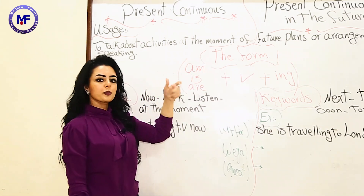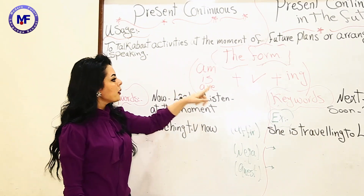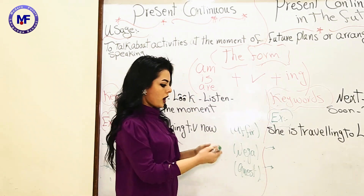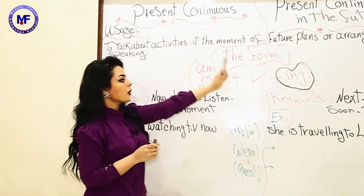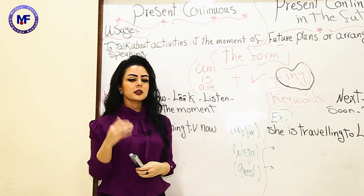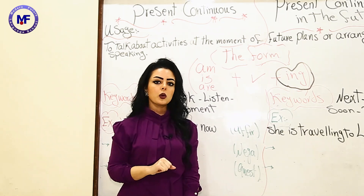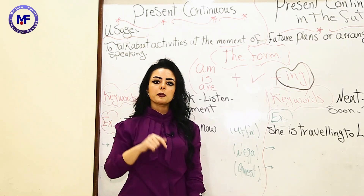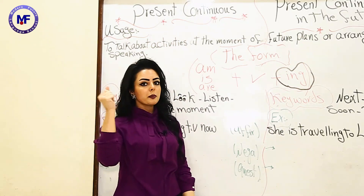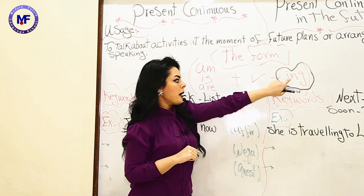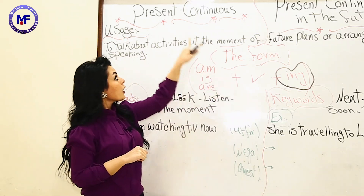What about the form of the present continuous? We have am, is, are — verb to be at the present — plus verb, plus -ing. So, you will remember the present continuous with -ing. Remember, the present simple you remember with 's' or no 's', and the past you remember with '-ed' or '-ied'. But the present continuous, you remember it with -ing, and before -ing you have to put am, is, or are.